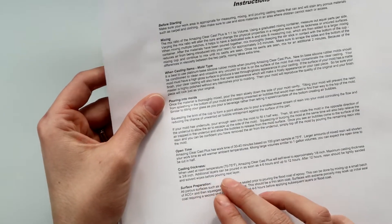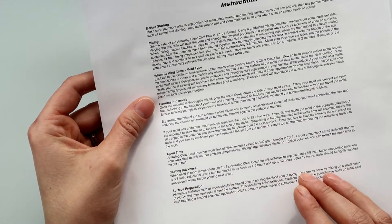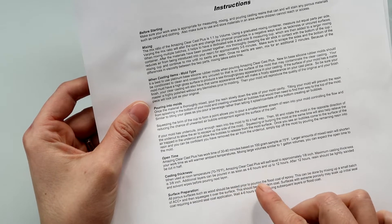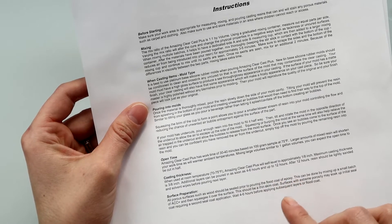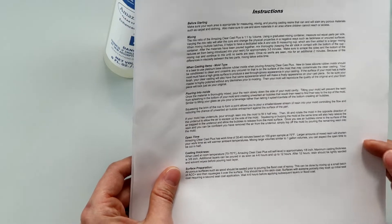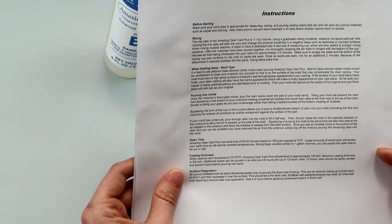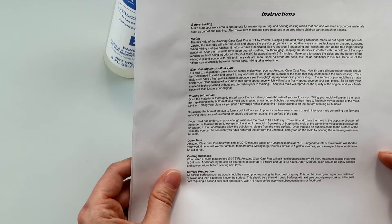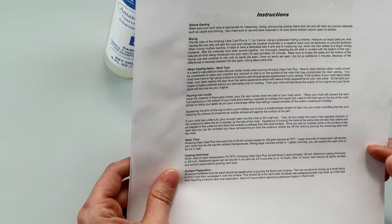Casting thickness when used at room temperature. Amazing Clearcast will self-level. Maximum casting thickness is three-eighths of an inch. Additional layers can be poured as soon as four to six hours and up to 12 hours. I don't know if it's going to be four to six hours. The original Amazing Clearcast sets up pretty quickly. I'd say within like an hour I could pour a second layer. So I don't know, we'll see what happens with this.